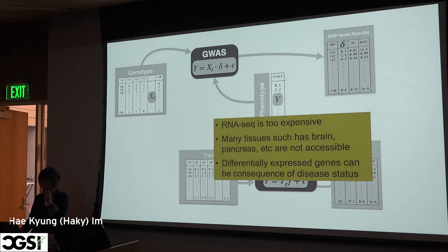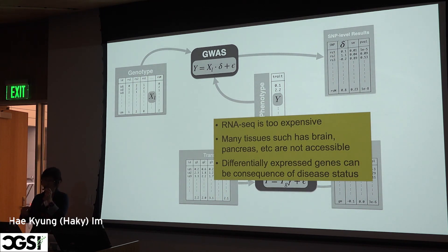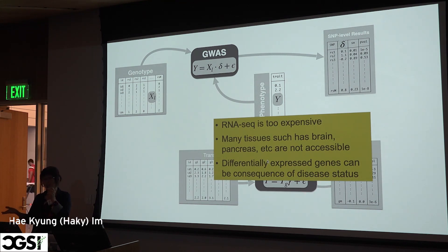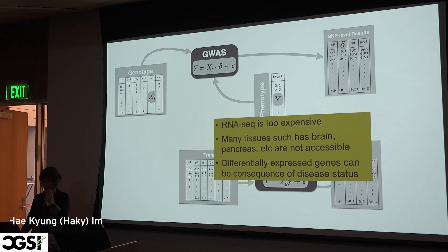There are some problems with that. RNA sequencing is too expensive to run at the scale of millions of individuals used in GWASs. Also, there are many tissues such as brain and pancreas that we cannot really access. Another problem is reverse causality: disease will cause changes in the transcriptome, and when we find associations, we cannot tell whether it's the disease causing changes in the transcriptome or the other way around — and we are interested in finding causal effects.